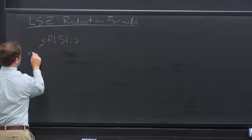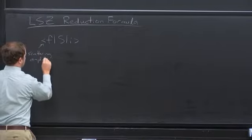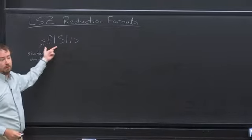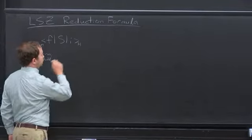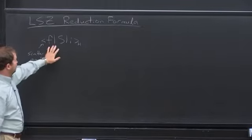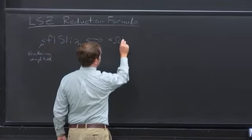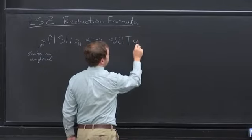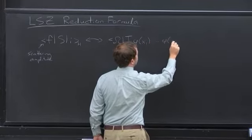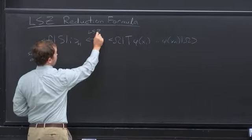This is a scattering amplitude — the amplitude of some initial state to evolve in time to be some final state. Here we're working in the Heisenberg picture. Our main result today will be a relationship between this scattering amplitude and a vacuum expectation value of a time-ordered product of field operators. So the LSZ reduction formula relates these two things.